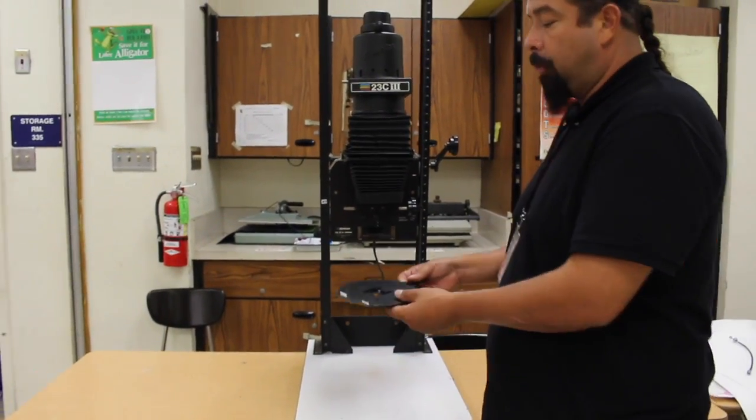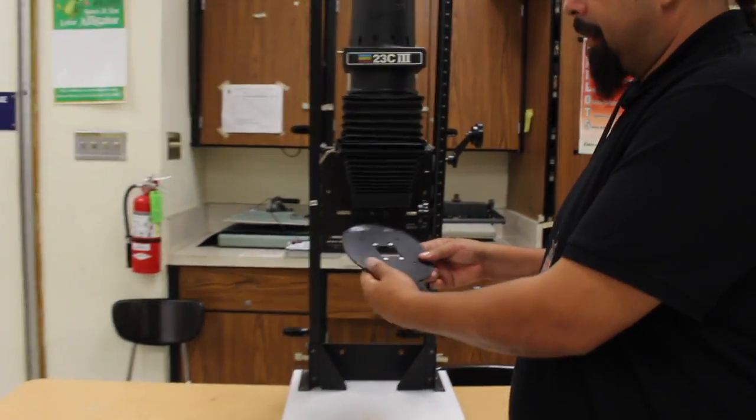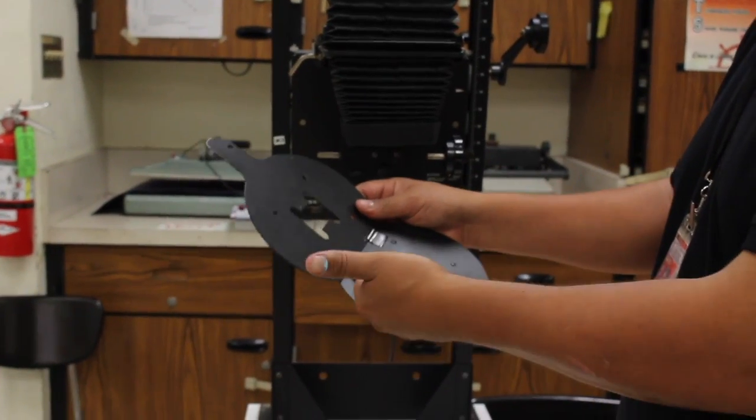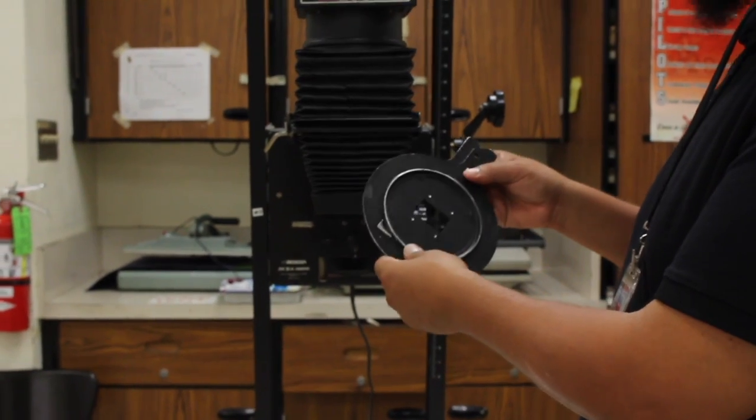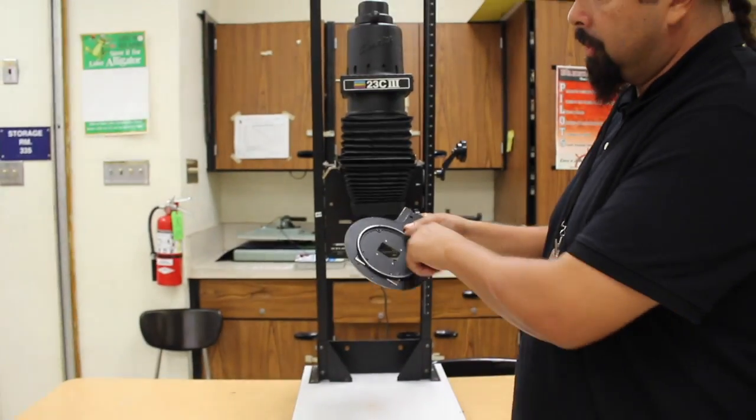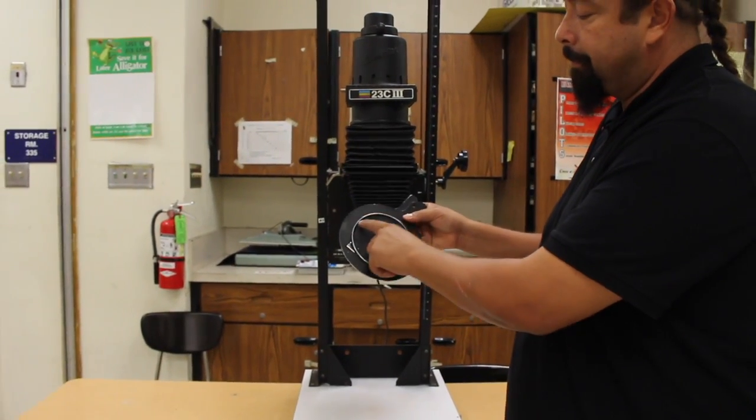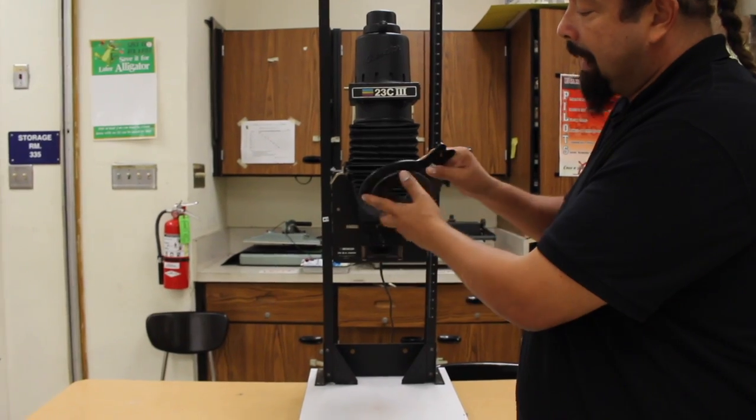Speaking of projecting onto the board, this is our negative carrier. So in here is where you place your negative, and then you insert this into the enlarger. The way you insert this into the enlarger, there's a circle here at the bottom. That circle faces down.